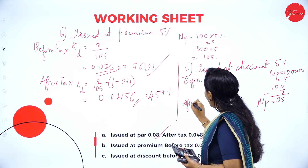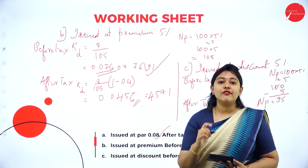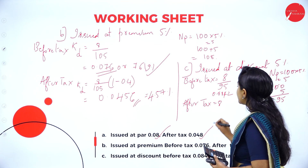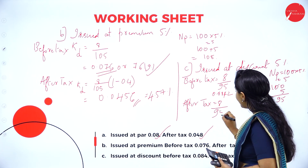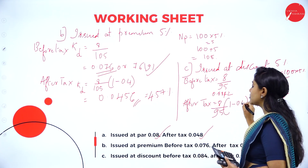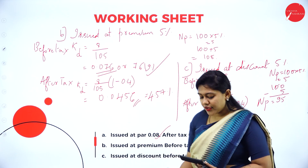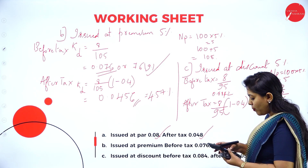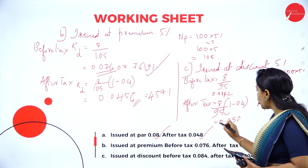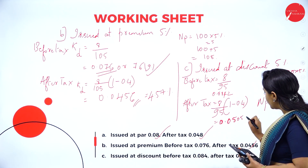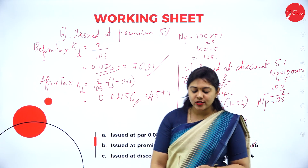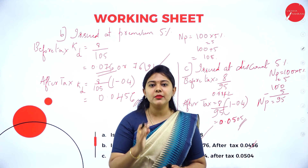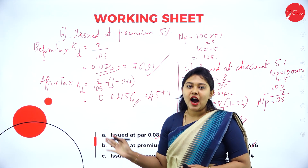After tax formula: interest divided by net proceeds into 1 minus tax. Interest is 8, net proceeds is 95, into 1 minus 0.4 equals 0.6. So 8 divided by 95 into 0.6 equals approximately 0.0505. This is the answer after tax. So this is how you calculate cost of debt issued at par, at a premium, and at a discount — before tax and after tax.